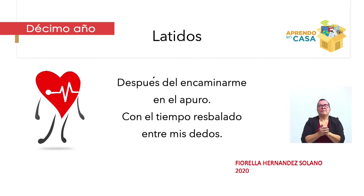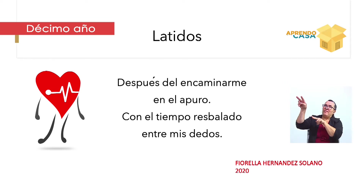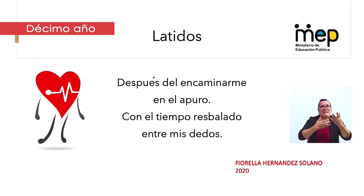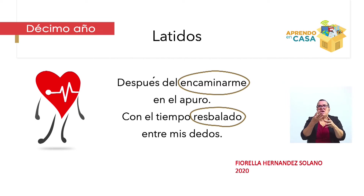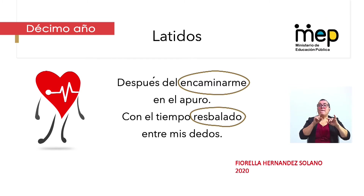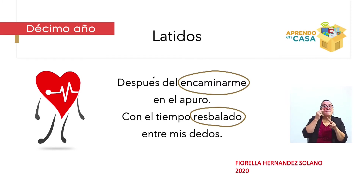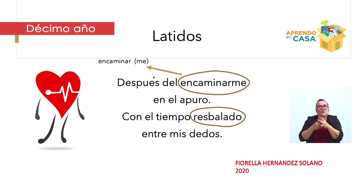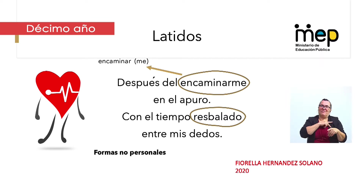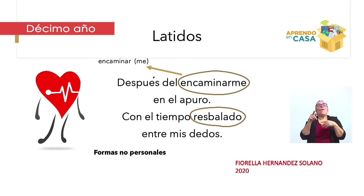Veamos la siguiente: 'Después del encaminarme en el apuro, con el tiempo resbalado entre mis dedos.' ¿Te parece que hay verbos? Encaminarme y resbalado. Esto pasa mucho, Marcela. Cuando analizamos oraciones hay palabras que parecen verbos, pero en estos dos versos de la canción no hay verbos. Ninguna de estas dos palabras son verbos. Igual que vimos en 'mirarnos', la palabra 'encaminar' es un verboide, es un infinitivo. Y la otra palabra, 'resbalado', es una forma no personal: hay unas que terminan en -ar, -er, -ir y otras en -ado, -ido, -oso, -cho. 'Resbalado' es un participio y 'encaminarme' sería un infinitivo.